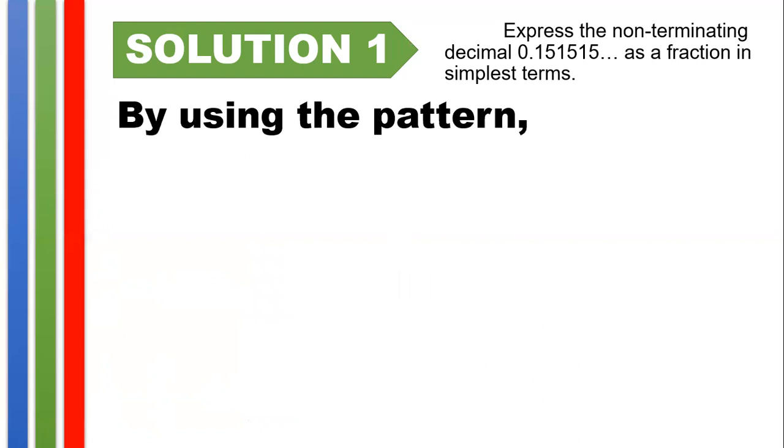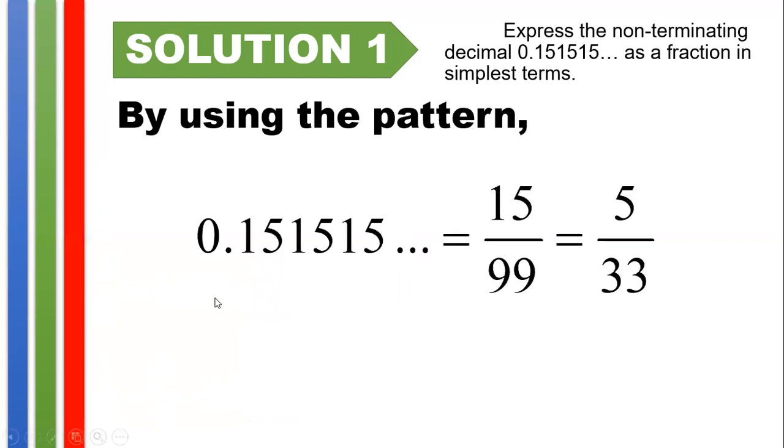So, by using that pattern, we could see that since we have 0.1515... and there are two digits being repeated, hence, by following the pattern earlier, we have 15 over the two 9s, 99, because there are only two digits that repeat. And we could see that 15 and 99 are both divisible by 3. So, expressing this, or dividing both numerator and denominator by 3, you have 5/33. Hence, the correct answer here is 5/33.